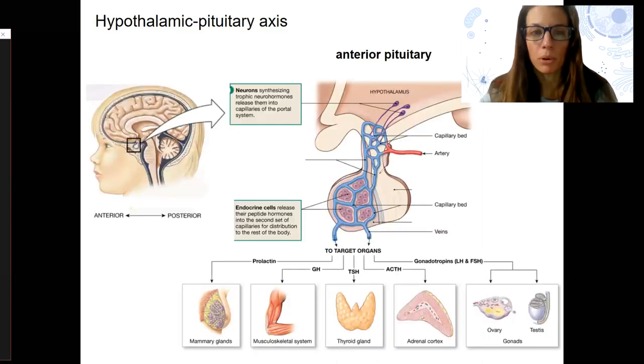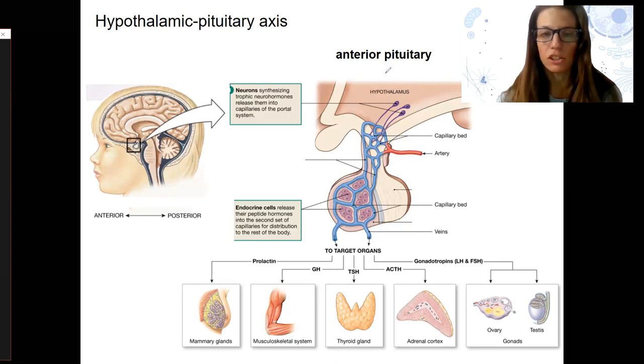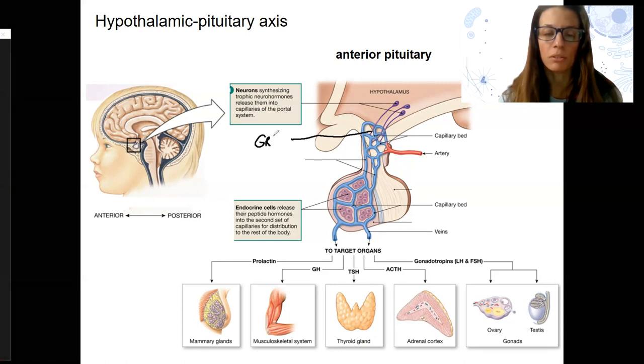So first, you may remember this lovely picture where these large cells in the hypothalamus are producing releasing hormones into this local capillary bed, this portal system. And in the case of what we're talking about this week, the hormone produced from these purple neurons is going to be gonadotropin releasing hormone, GnRH.